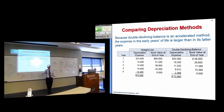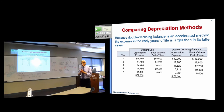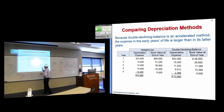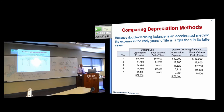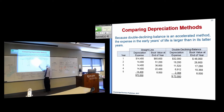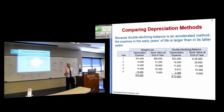An important point: accounting methods do not change total cash flows. Both companies paid $80,000 for the truck, so the total cash outflow doesn't change. What changes is the total effect of depreciation timing — it just shifts the income recognition to different periods. All depreciation methods do is change the timing of recognition.